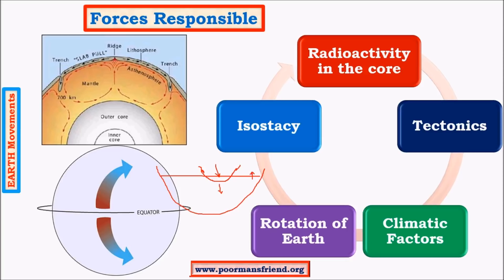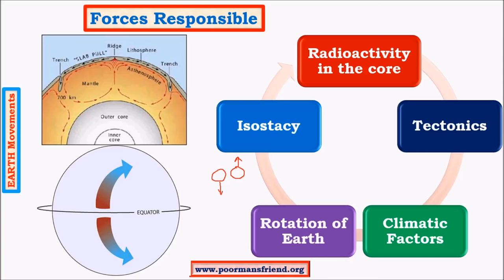The same principle applies to the earth's surface. Earth has different landforms with varying densities — rocks are denser whereas soil is less dense. Heavier material sinks while lighter material rises or floats. In isostasy, a balance is achieved between denser and less dense landforms. Mountains are less dense, so they float upward, while plateaus have much denser regions below their surface and tend to sink towards the earth's center.